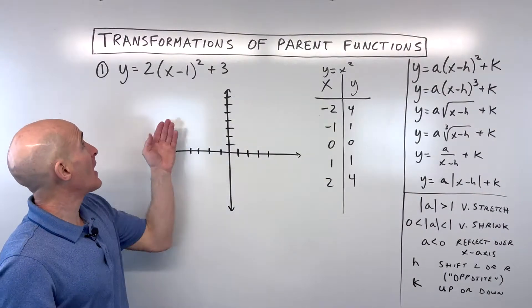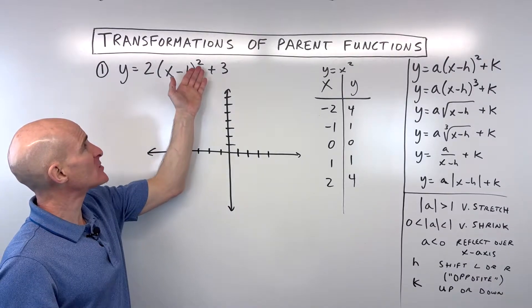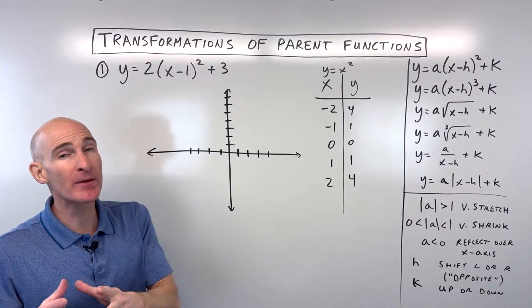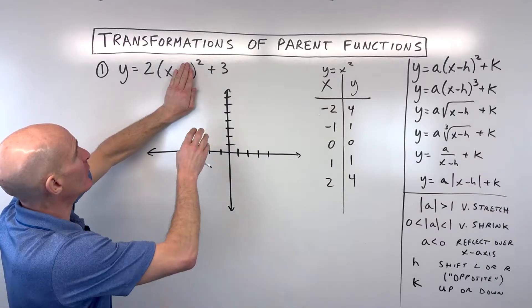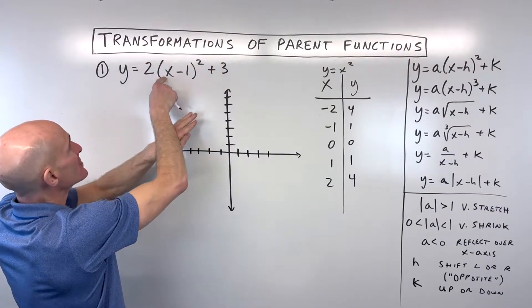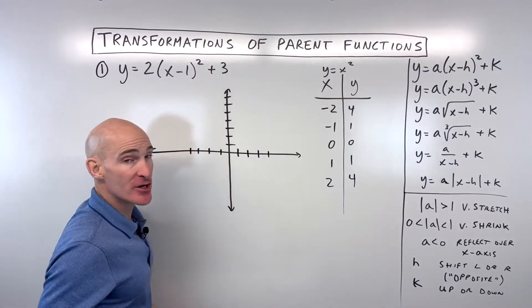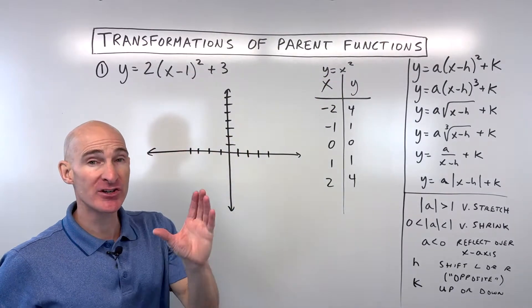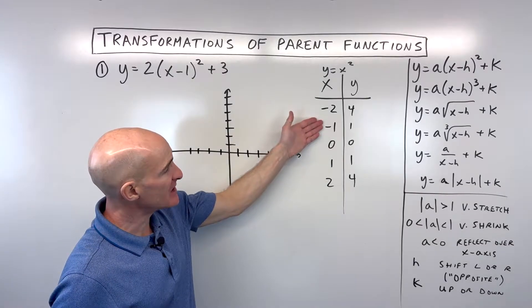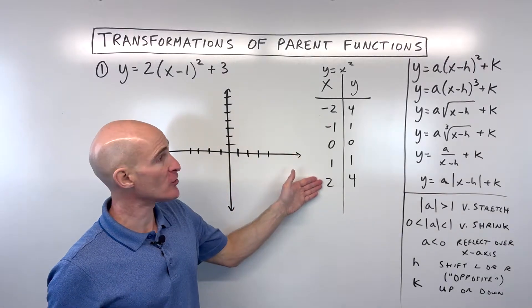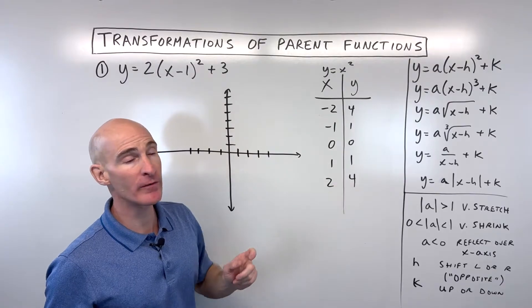Example 1: y = 2(x - 1)² + 3. The parent function is x², a quadratic — a U-shaped parabola. Key points: x values of -2, -1, 0, 1, 2 give y values of 4, 1, 0, 1, 4 after squaring. Now let's apply the transformations.